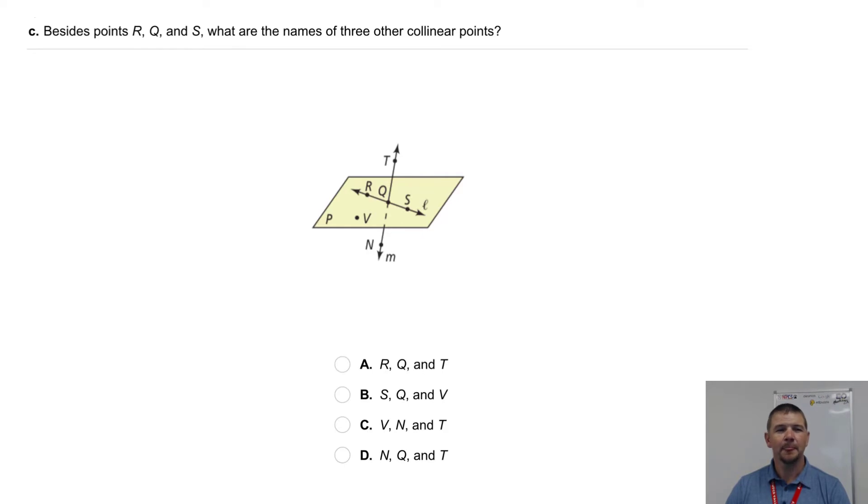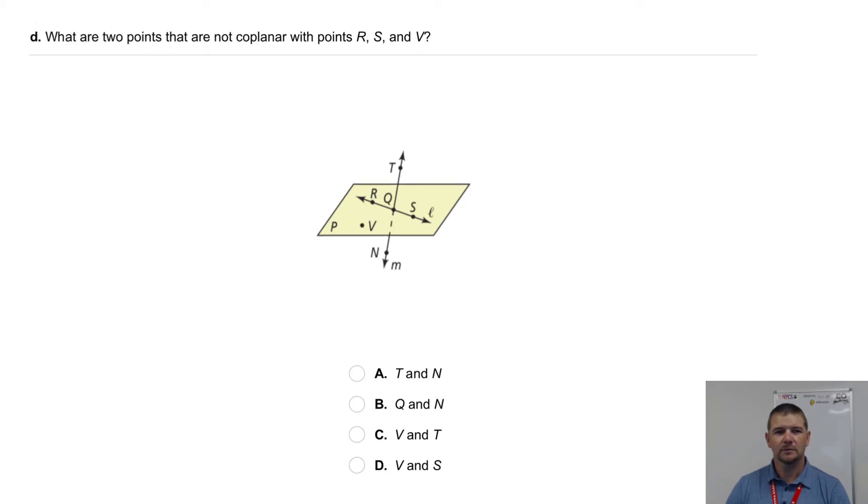Part C: besides points R, Q, and S, what are the names of three other collinear points? Part D: what are two points that are not coplanar with points R, S, and V?